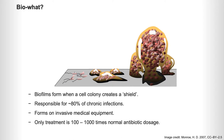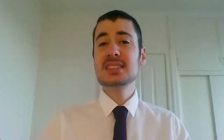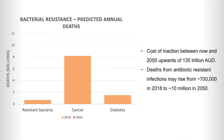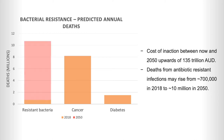At the moment the only treatment is to give between a hundred and a thousand times a normal antibiotic dosage. This means that common infections may once again become deadly, and the cost of inaction between now and 2050 could be upwards of $135 trillion Australian dollars. Deaths from antibiotic resistant infections may rise from 700,000 in 2018 up to 10 million by 2050, surpassing current annual cancer deaths.